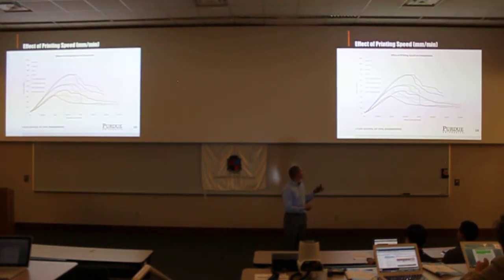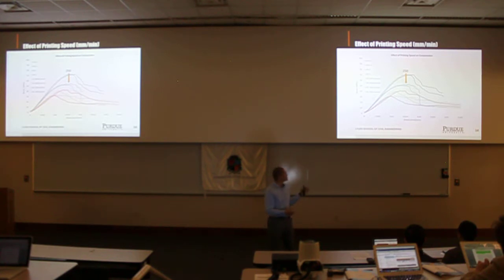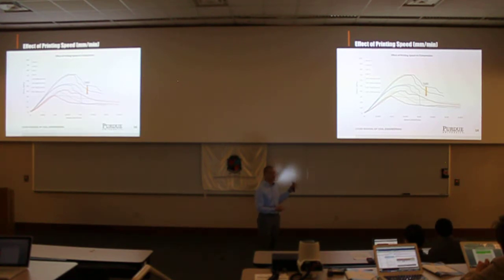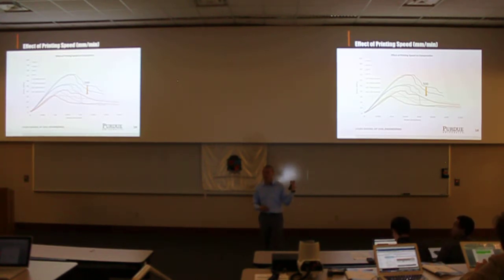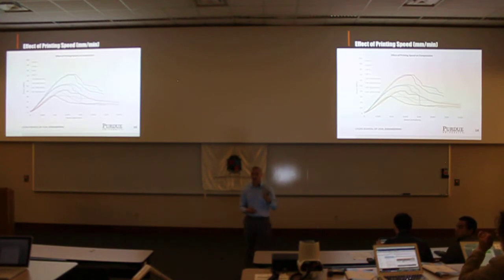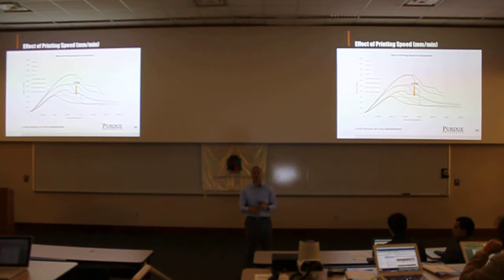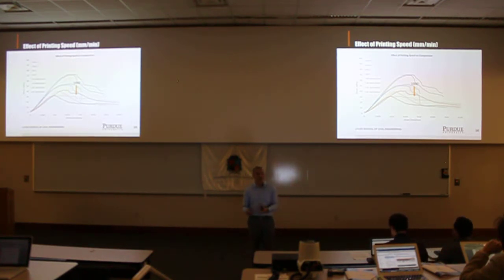Finally, we have the effect of printing speed. The default speed we are using for testing is 250 millimeters per minute. The black lines are the reference for cast samples. You can see the behavior at 500 and 1,000 millimeters per minute. We need to do further research in this topic in order to generalize these results and determine which is the best printing speed for the process.